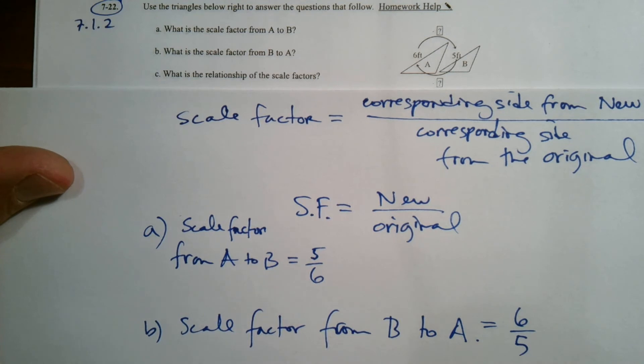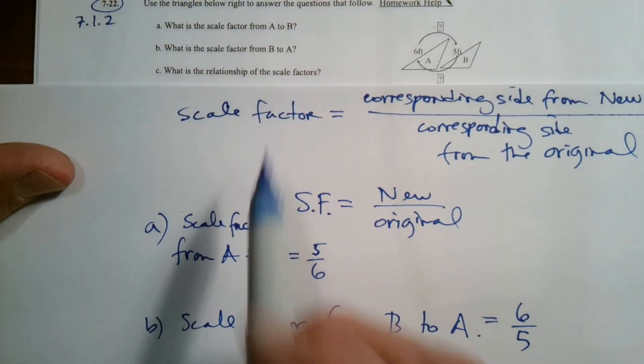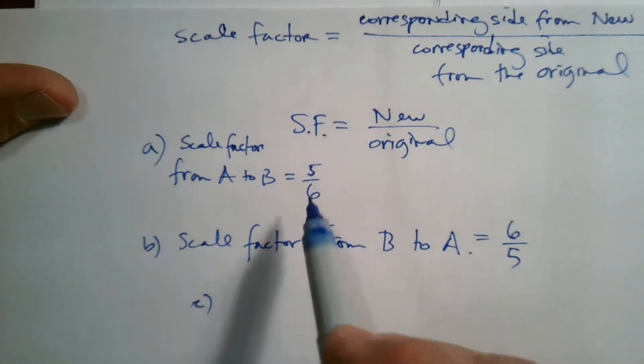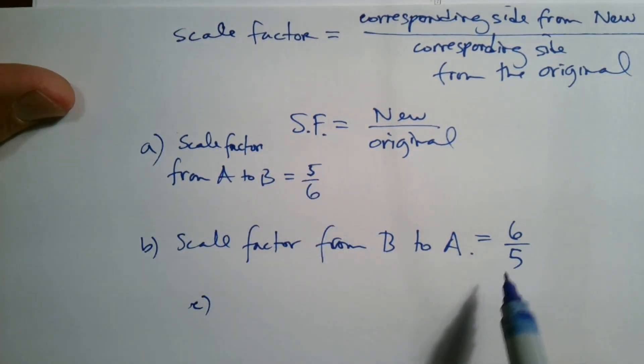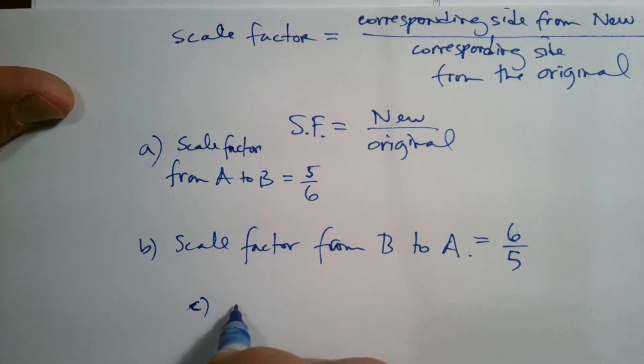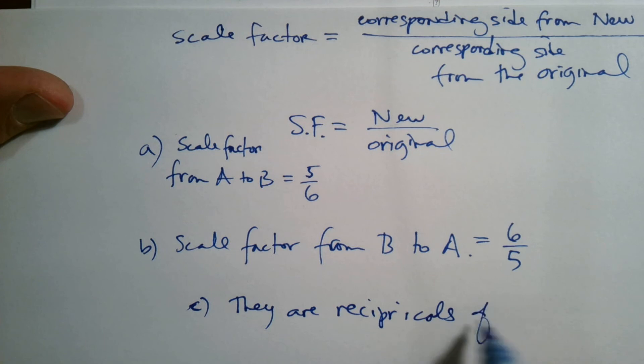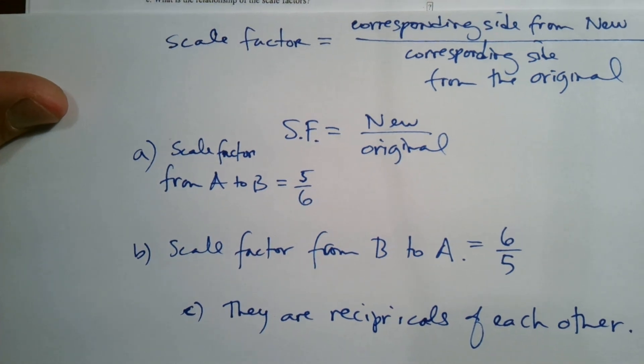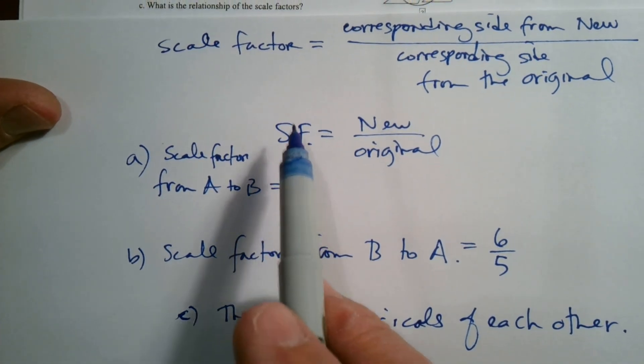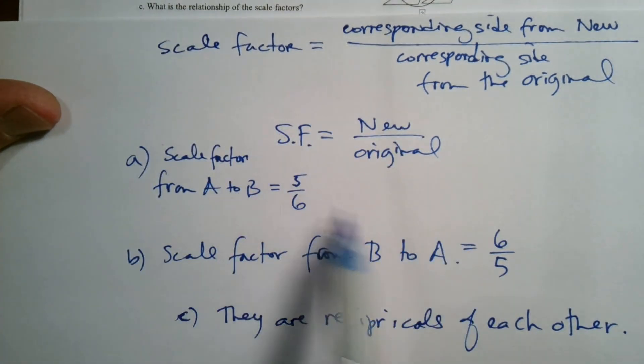Part C asks us, what is the relationship of the scale factors? Well, if you look at the two scale factors, one is five over six, the other one six over five. The scale factors, the relationship is they are reciprocals of each other. So there we have our relationship based on what we saw with those two scale factors.